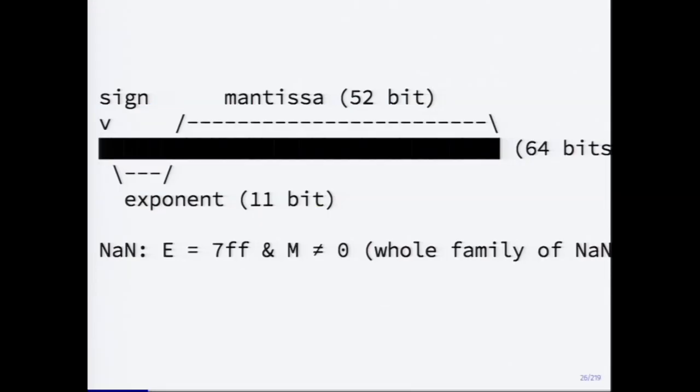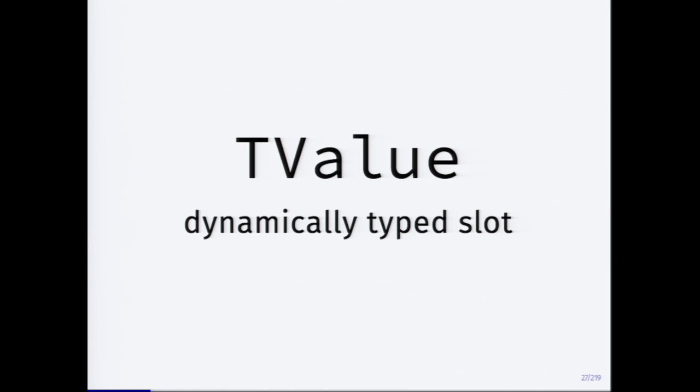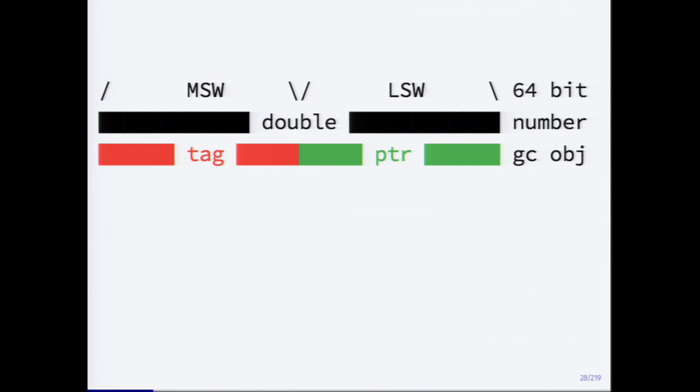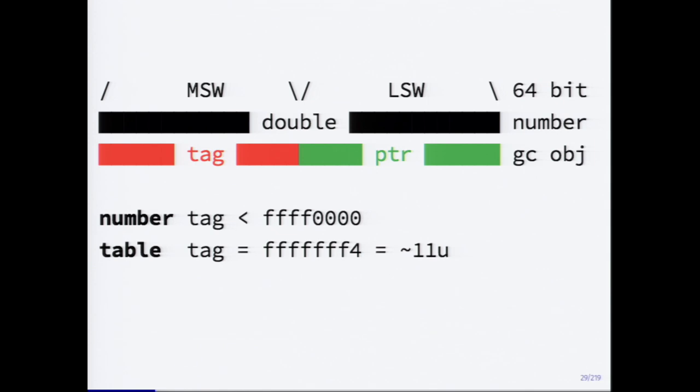What LuaJIT does with this observation is it defines a TValue — a dynamically tagged slot — the size of a double. If you're storing a number in it, it's stored directly. But if you want to store a heap-allocated object, you store the pointer to it in the lower word and put the type tag in the upper word. To check whether something is a number, you just compare the most significant word with a magic value at the NaN boundary. For example, the table tag would be a specific value, and the pointer would be in the lower part.